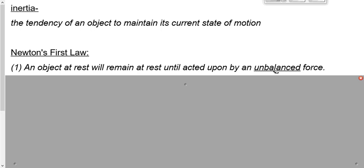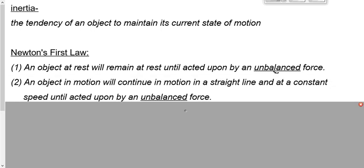Now, the second part of it says an object in motion will continue in motion, straight line, constant speed. Remember me going around the turn when I was 17 driving the van? I continued in motion in a straight line at a constant speed until I hit a guardrail, until the unbalanced force acted on me. An object in motion will continue in motion in a straight line at a constant speed until acted upon by an unbalanced force.